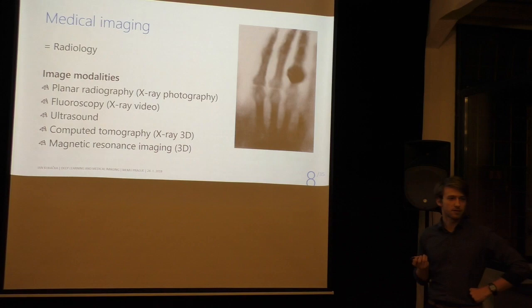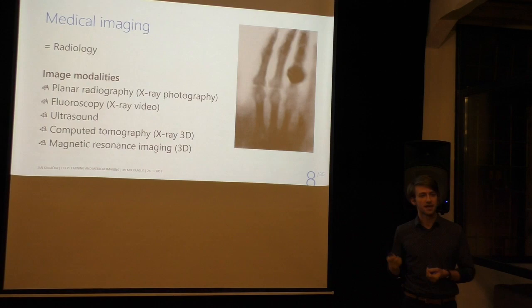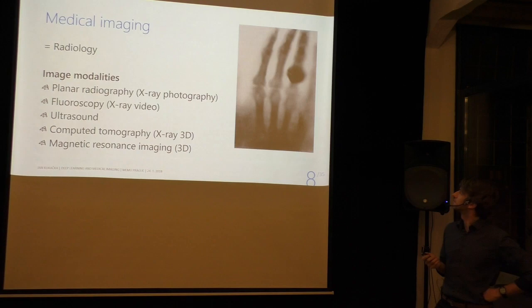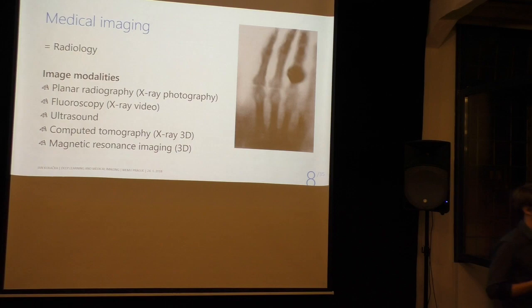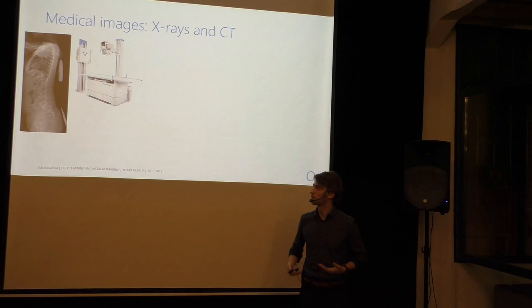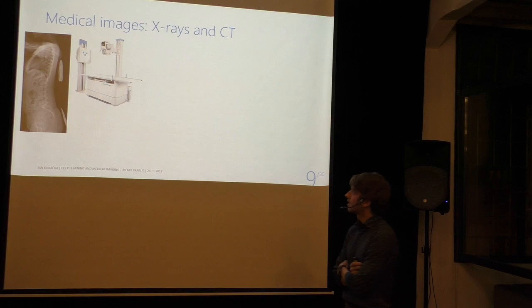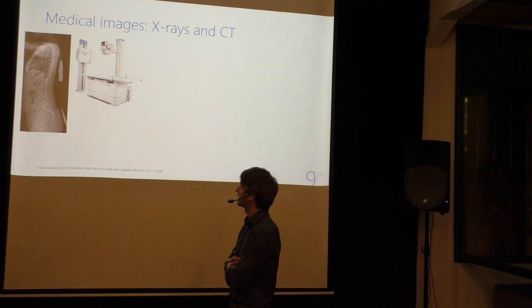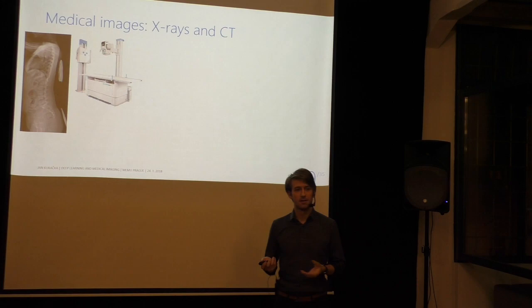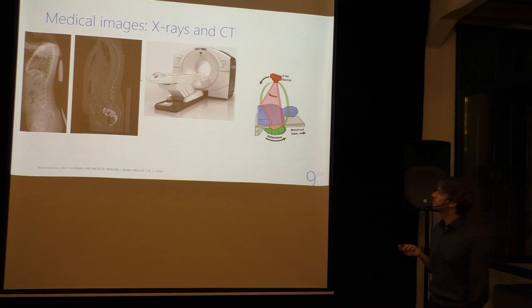The oldest modality is planar radiography — I guess every one of you has taken an X-ray image at some point in your life. This is the first X-ray image ever taken: the hand of Mrs. Röntgen from 1895. The black thing is not a tumor, it's a ring. X-ray planar radiography has progressed in quality ever since. You can see inside the patient without cutting them open — that's brilliant. The problem is if you're interested in some details like the spine, you can't really see it because it's hidden behind all the other anatomy like the ribs.